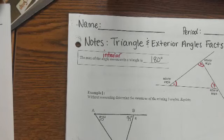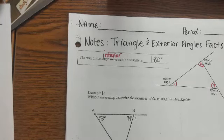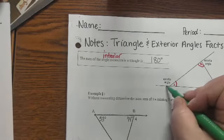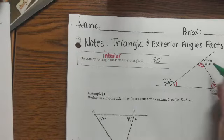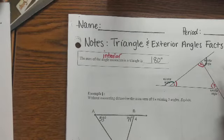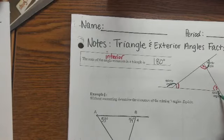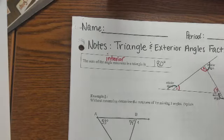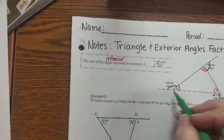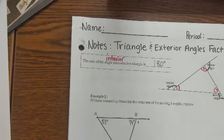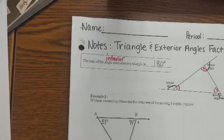We also have exterior angles, and this is where it gets kind of crazy. You have this angle, you have this angle, and you have this angle, because these lines are coming off of here, forming an angle. So without measuring, determine the measures of the missing three angles. There are a couple ways we can do this.